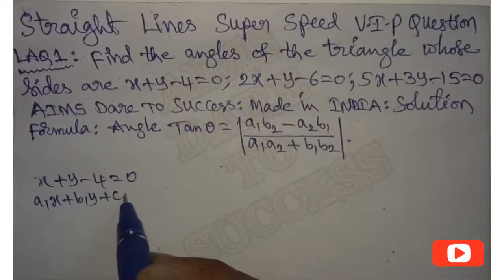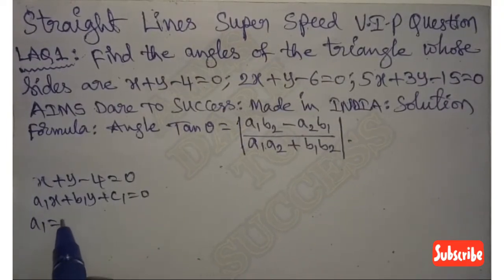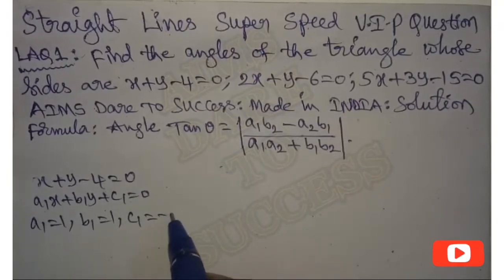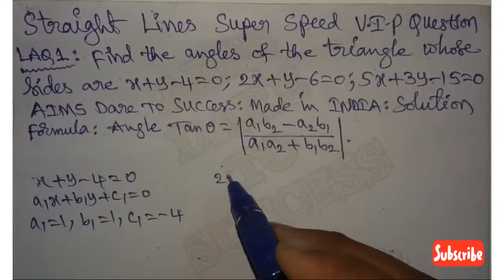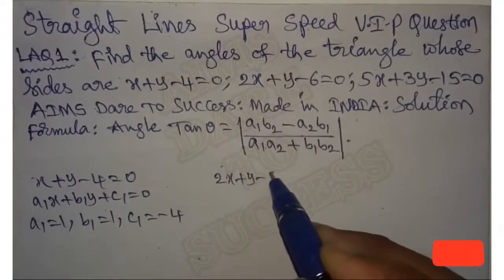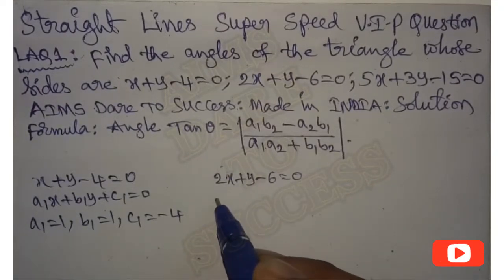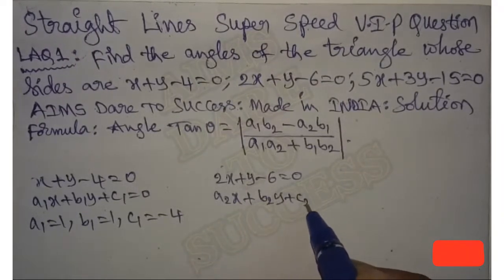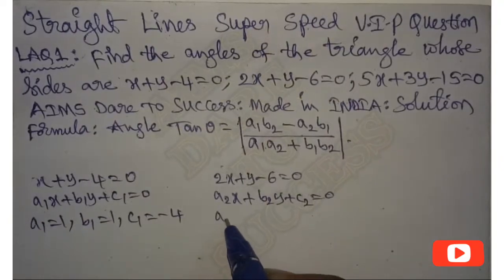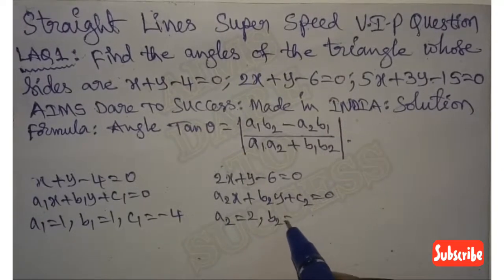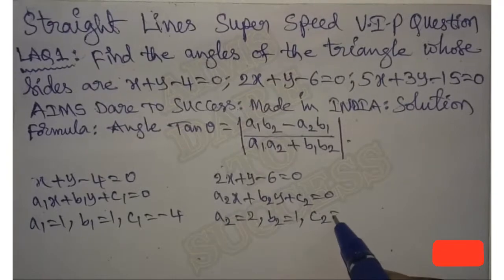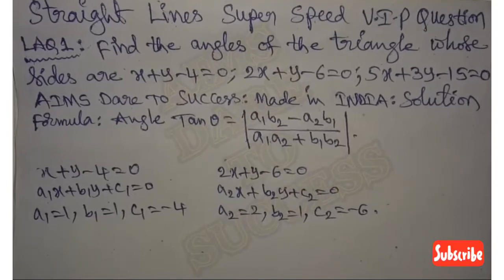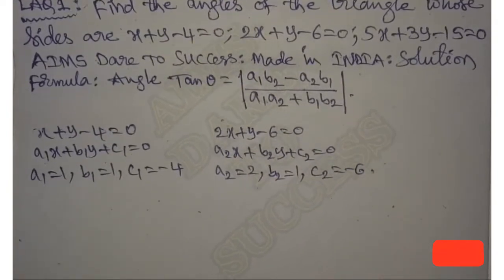Solution will start. First equation: x plus y minus 4 equals 0, comparing with a1*x plus b1*y plus c1 equals 0, we get a1 = 1, b1 = 1, c1 = minus 4. Second equation: 2x plus y minus 6 equals 0, comparing with a2*x plus b2*y plus c2 equals 0, we get a2 = 2, b2 = 1, c2 = minus 6. Substituting all values into the formula.